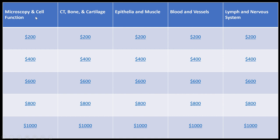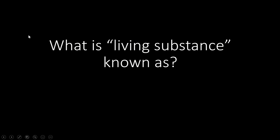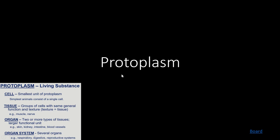Starting with microscopy and cell function. The first question: what is living substance known as? Hopefully you remember that is protoplasm. That's an easy definition to forget because it's so straightforward. Protoplasm is any kind of living substance. Remember the breakdown: enough living substance makes a cell, which is the smallest unit of protoplasm. Enough cells make a tissue, enough tissues make an organ, organs make an organ system, and then you get a whole organism.